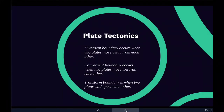Magma from the mantle solidifies into basalt, a dark, dense rock that underlies the ocean floor. Thus, at divergent boundaries, oceanic crust made of basalt is created. The key point is that a divergent boundary occurs when two tectonic plates move away from each other.